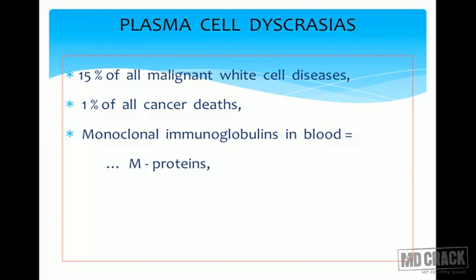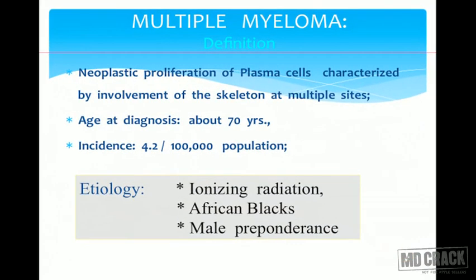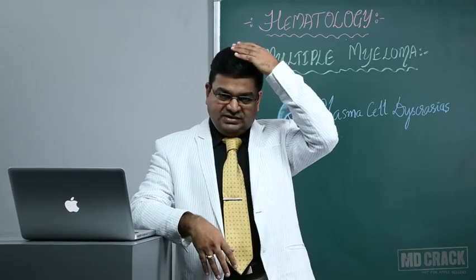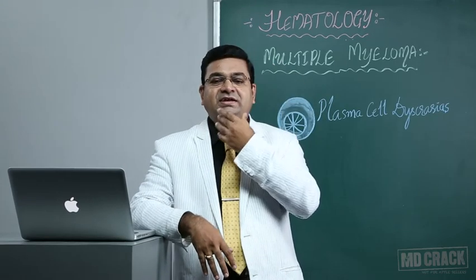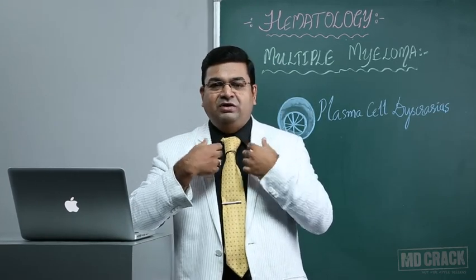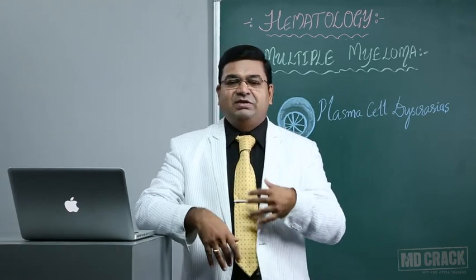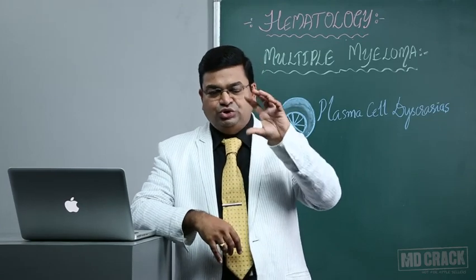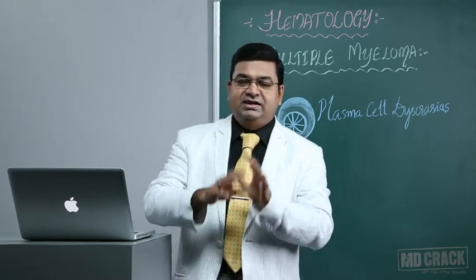Multiple myeloma is due to the excessive production of monoclonal immunoglobulins in the blood, which we call M proteins - M standing for myeloma. It mainly involves the axial skeleton at multiple sites. The axial skeleton - the central axis of the body - means the skull is mainly involved, along with the ribs, clavicle, and pelvic bones. These bones commonly show osteolytic lesions on X-ray.